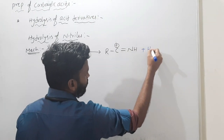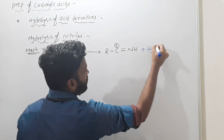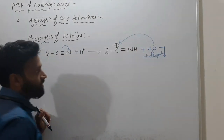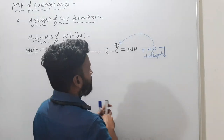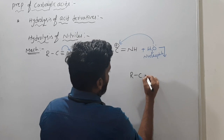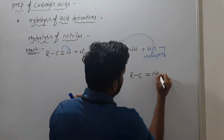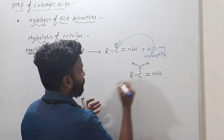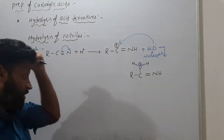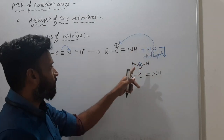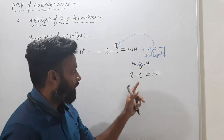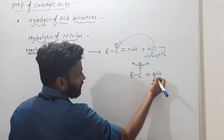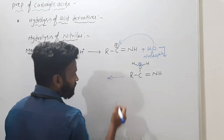Now water will add. Water is acting as a nucleophile here — it has a lone pair. Nucleophilic addition on this positive carbon happens. So we get R-C with double bond NH and water attached to carbon, giving O with positive charge because oxygen donated its lone pair.